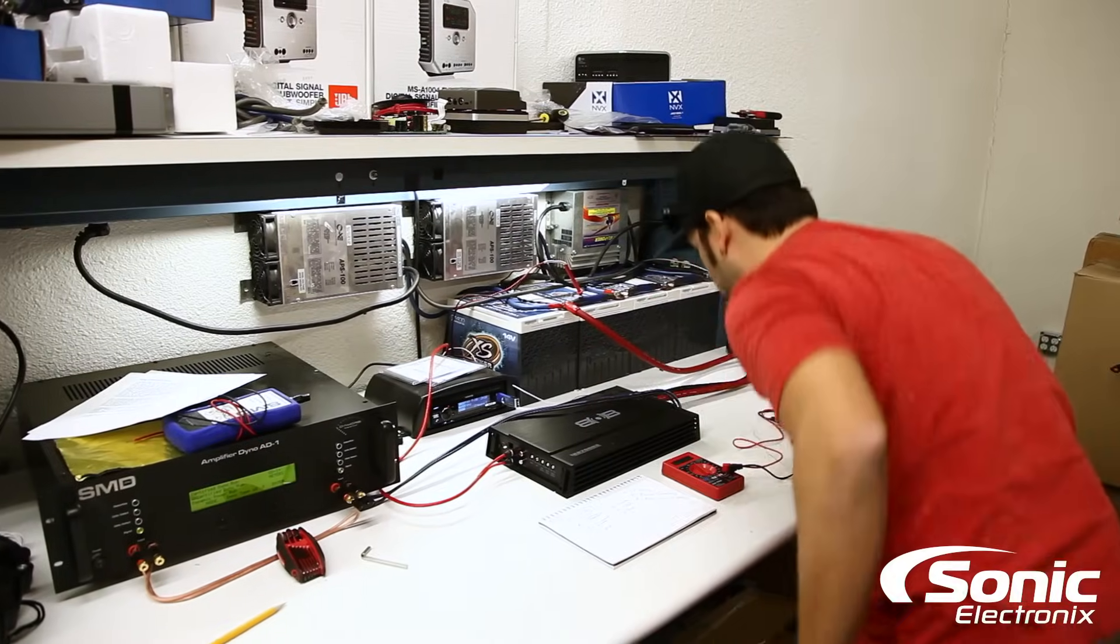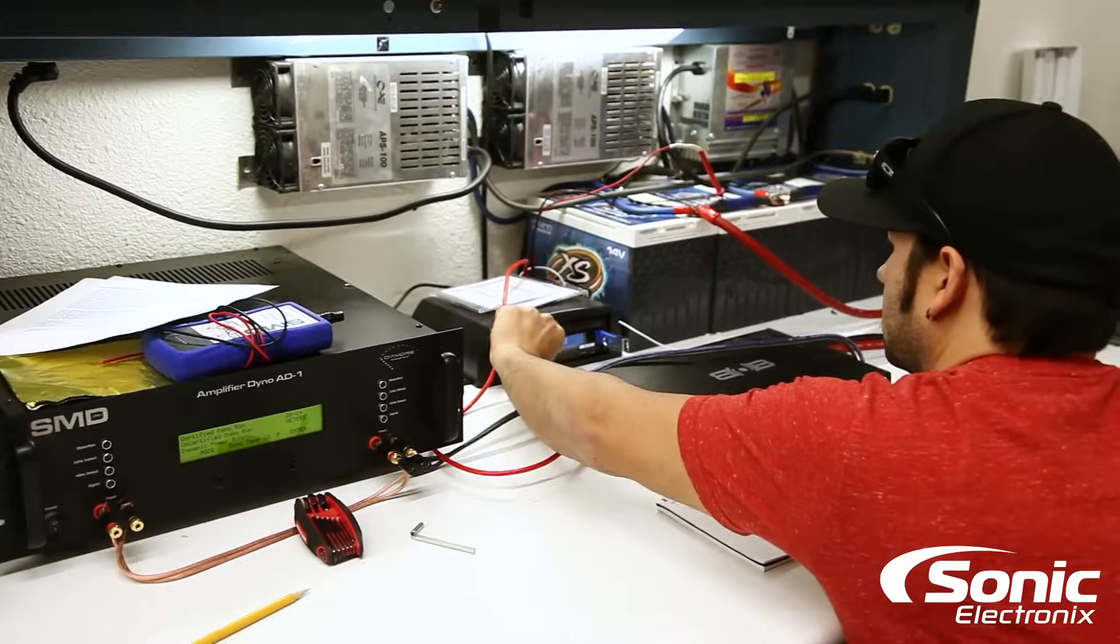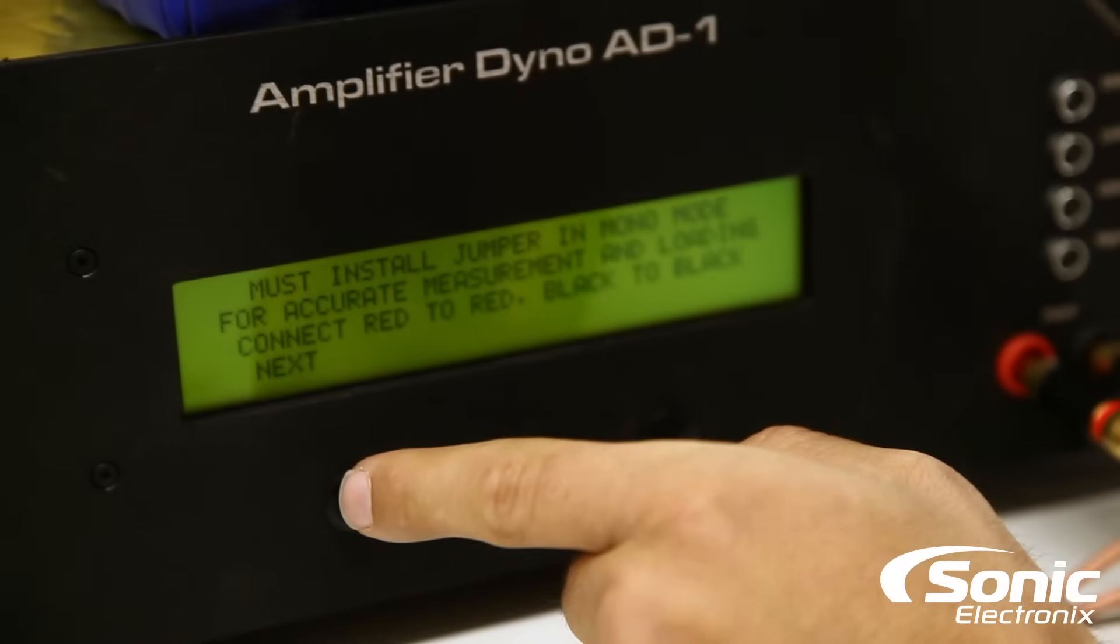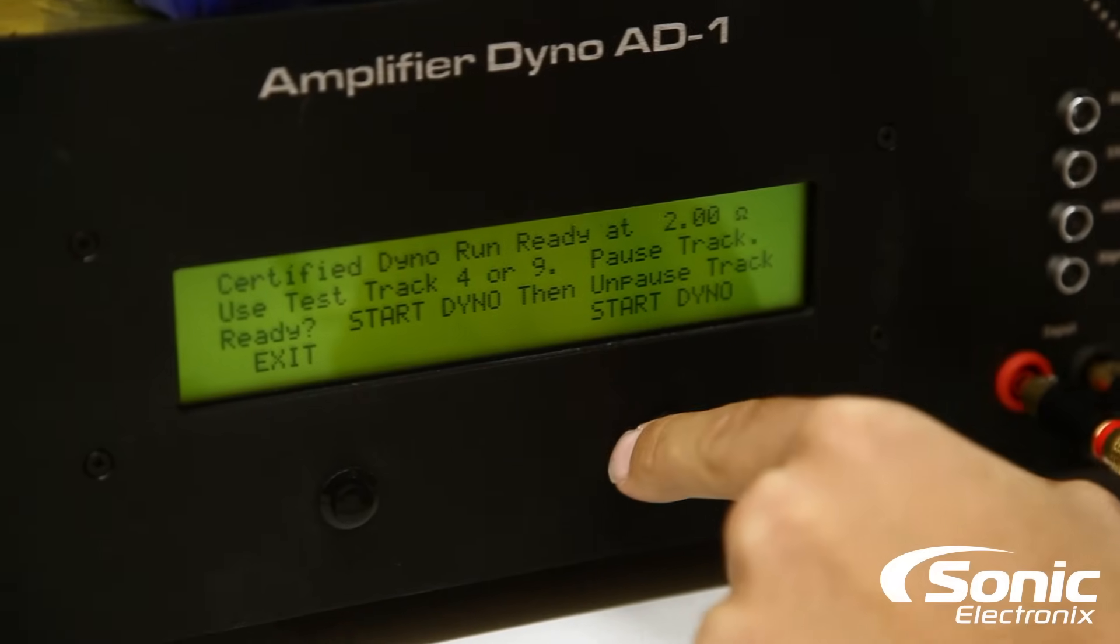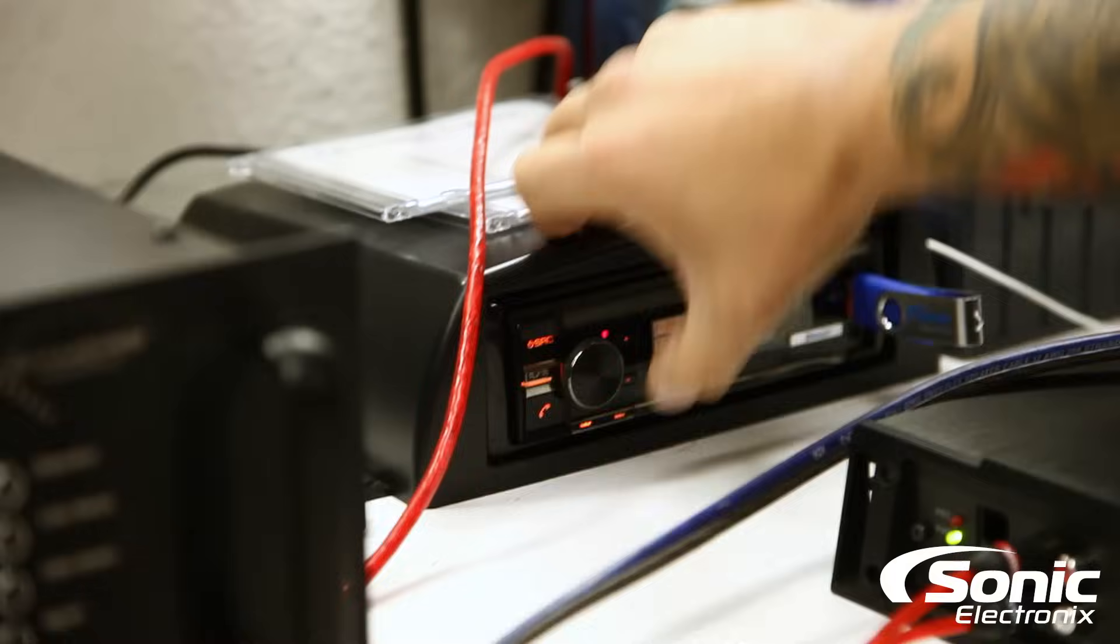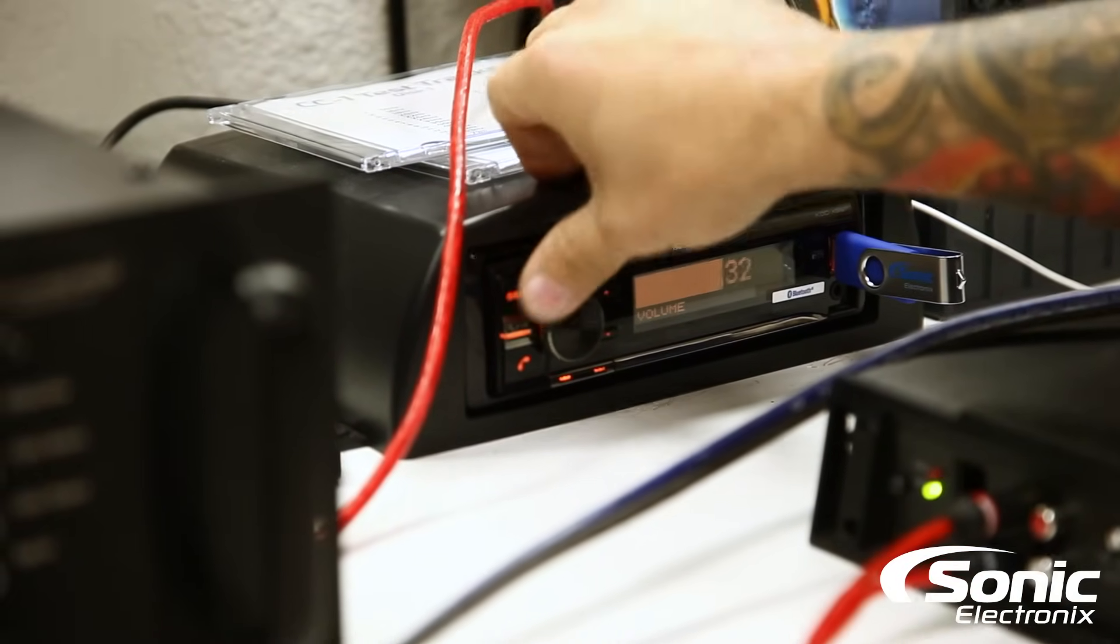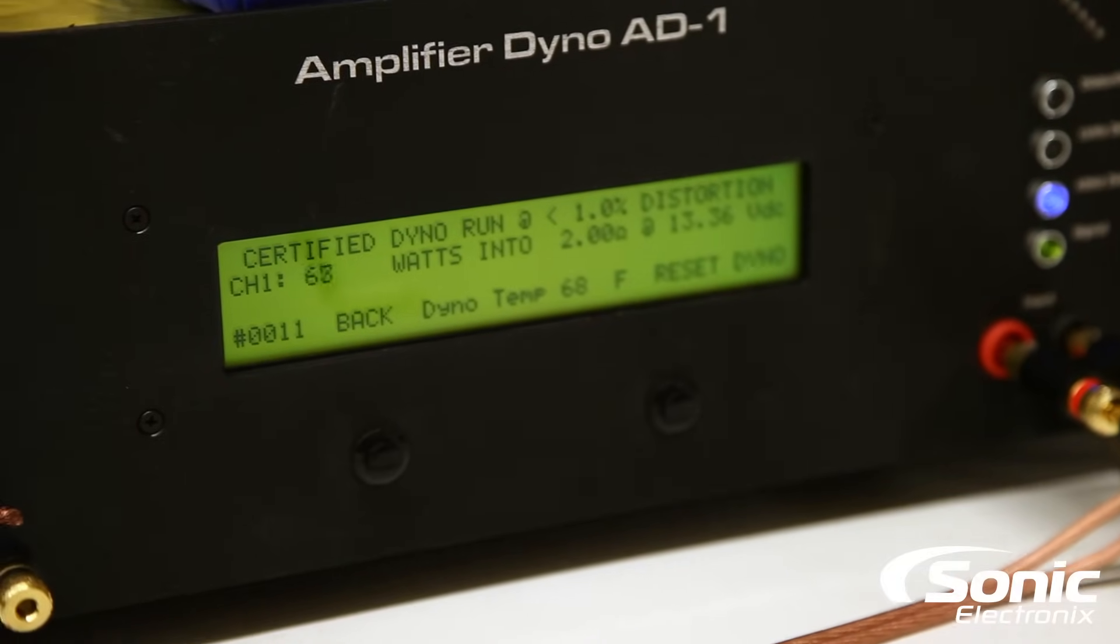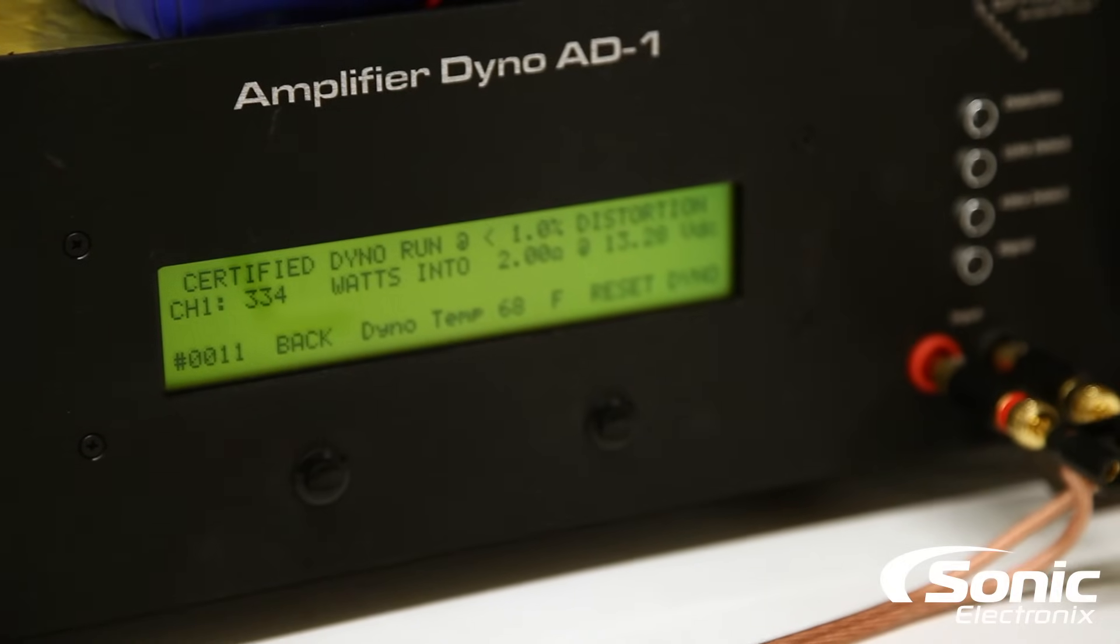All right, cool. So I went ahead and hooked up the amplifier to the dyno. We're gonna do a certified dyno run mono, and obviously our equation was at 2 ohms. And we need to go to track 4 on our disc and we're gonna crank that thing all the way because we know that's undistorted. And we're gonna hit start. And here we go.